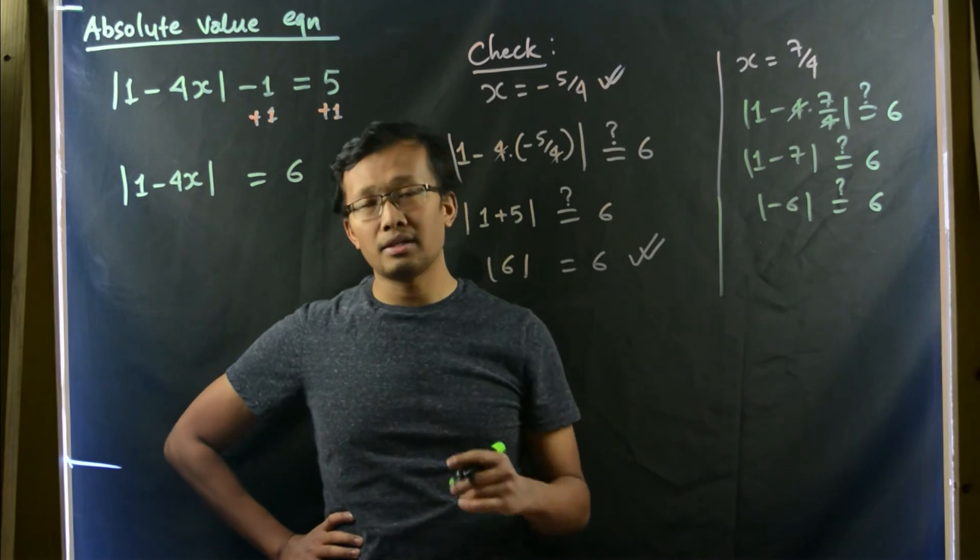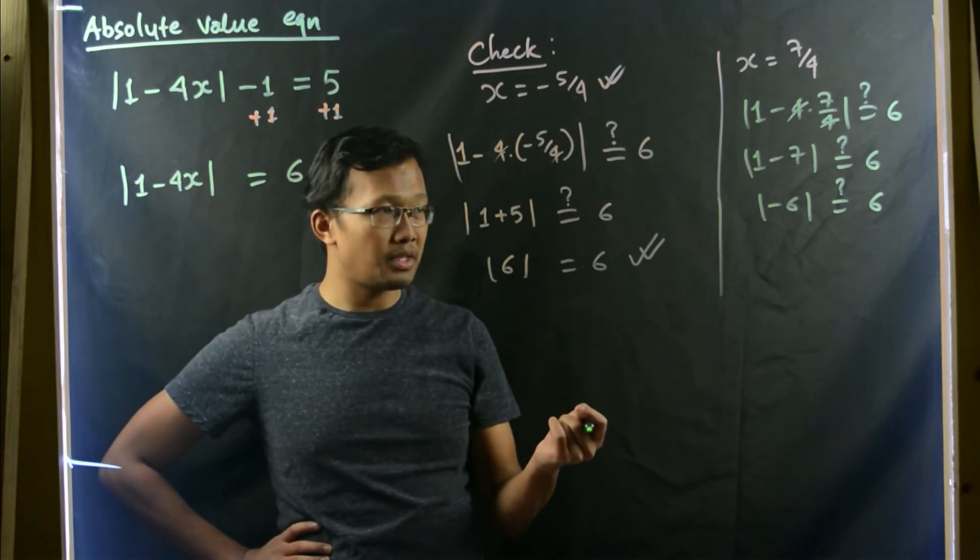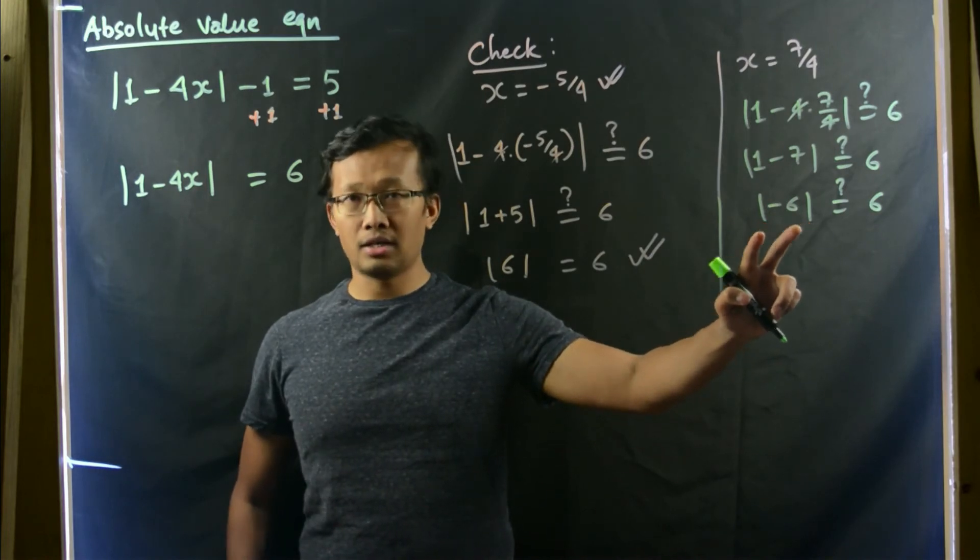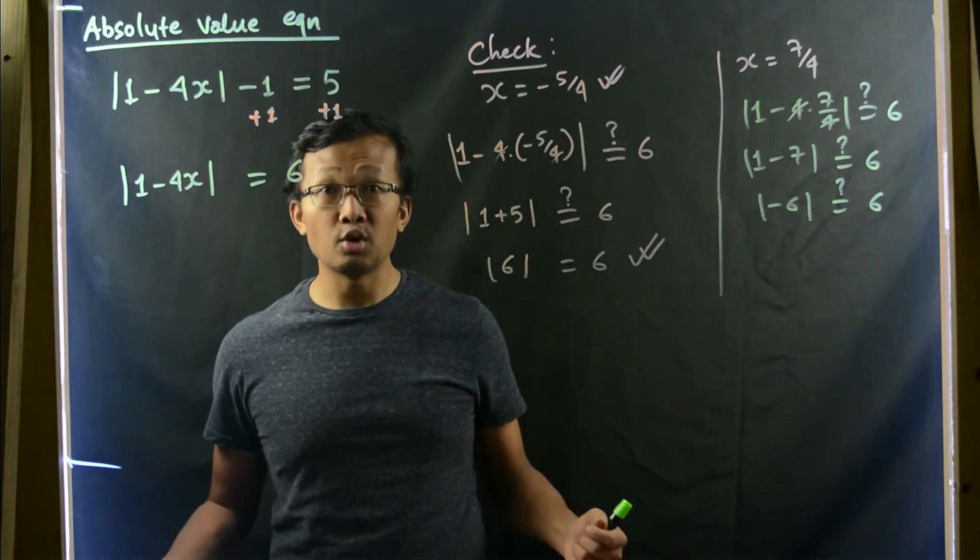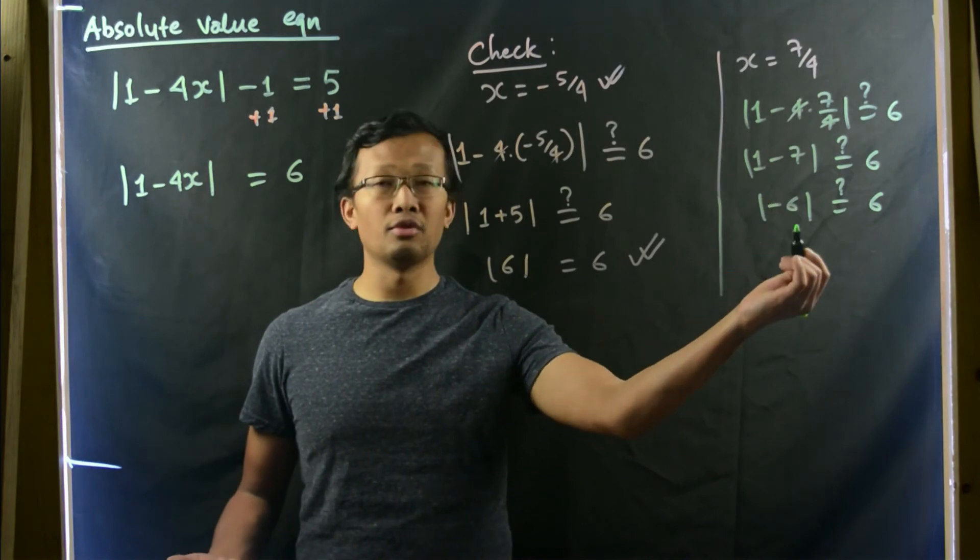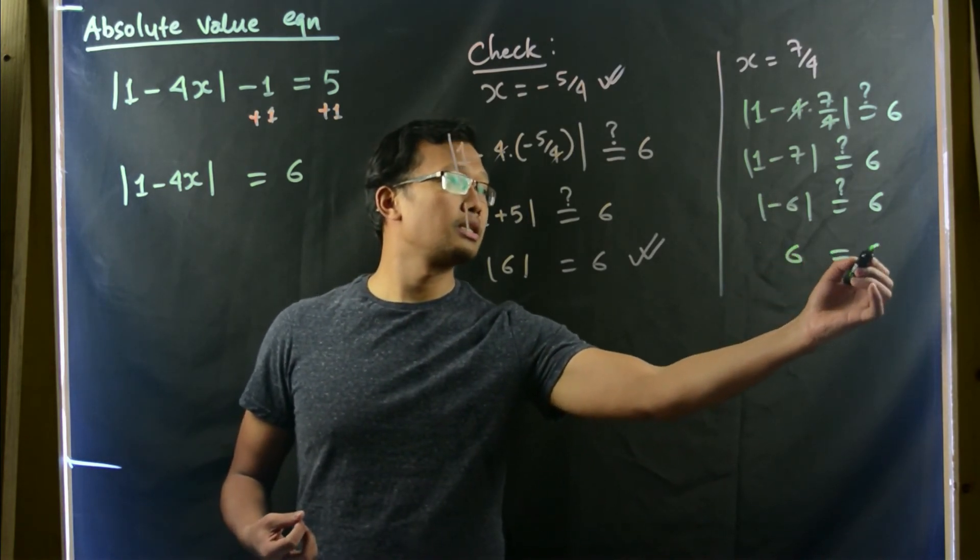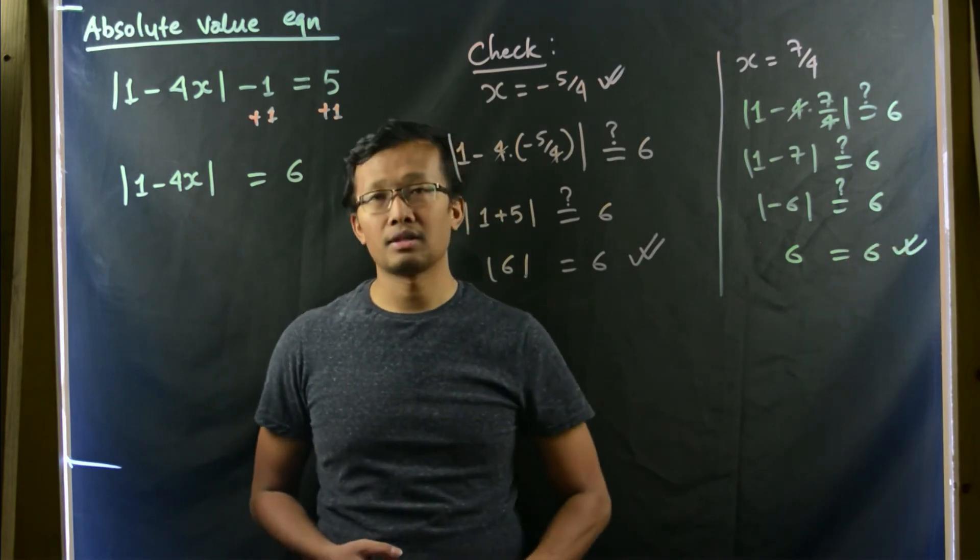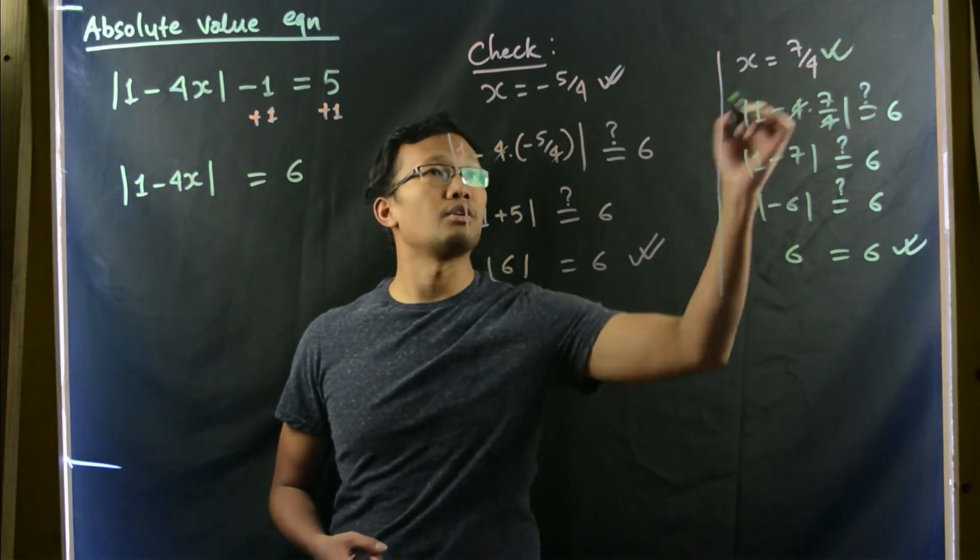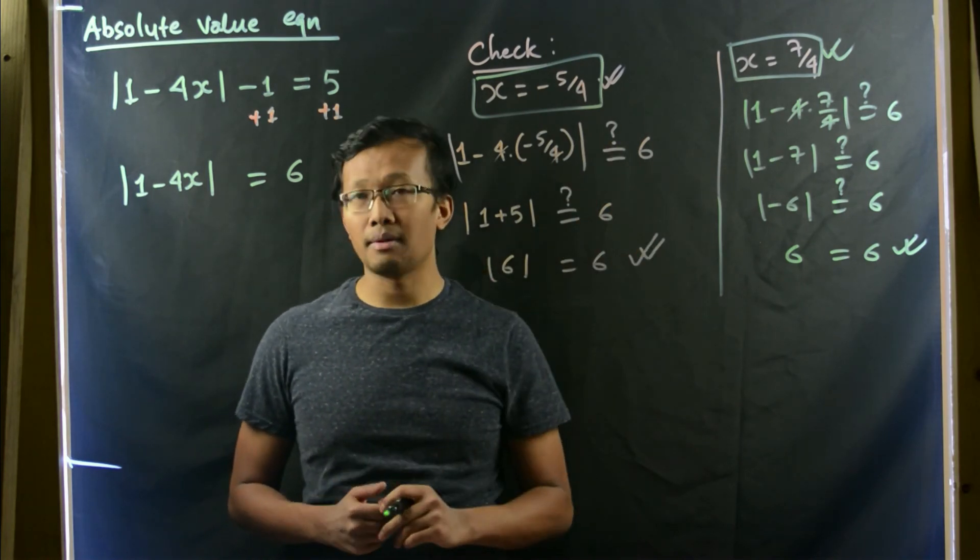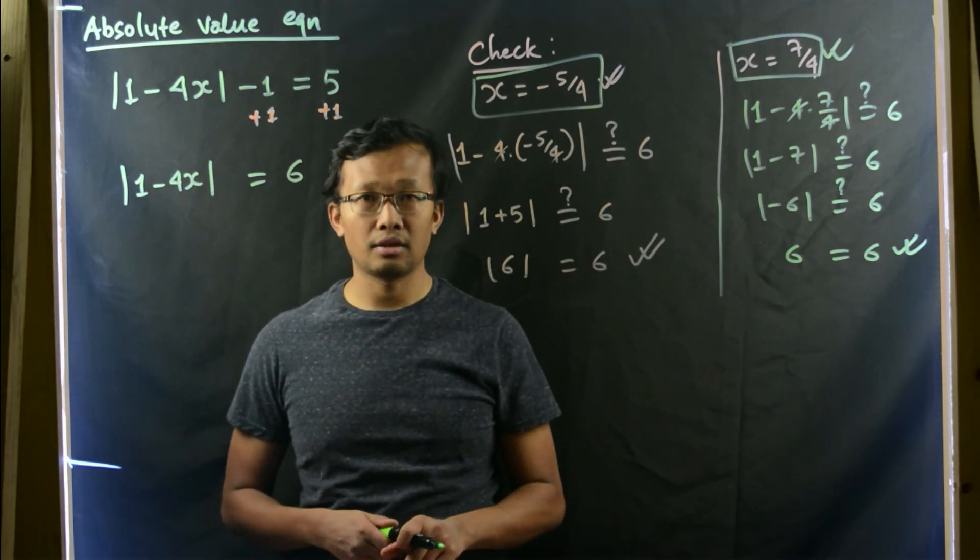We know that by the definition of absolute value function, everything that lies inside these two bars will be written as a positive number. So this negative will be ignored. That would be 6 equals 6, which is true. So this is also a true solution. Both x equals negative 5 by 4 and positive 7 by 4 are correct answers.